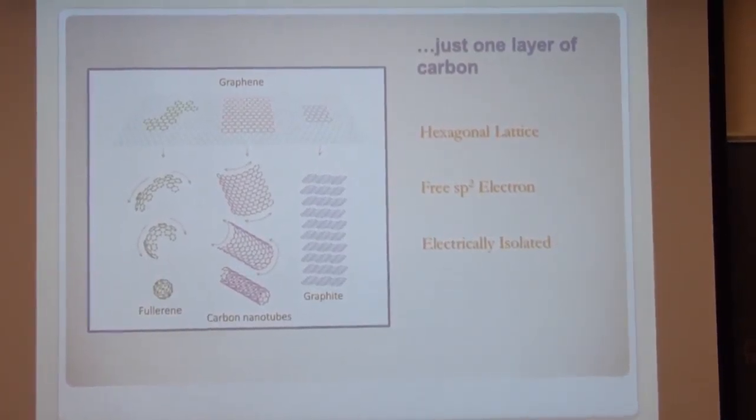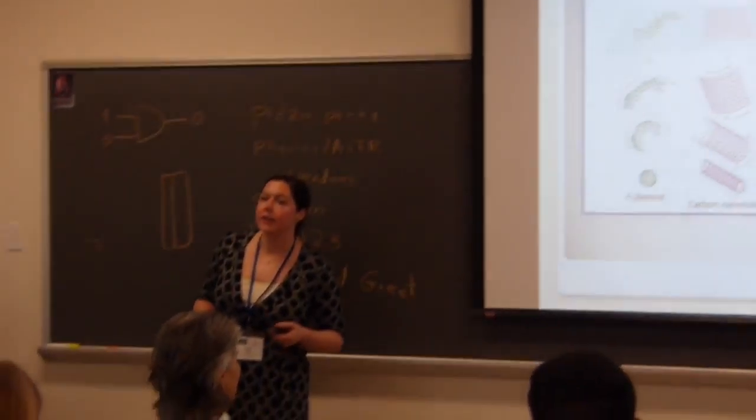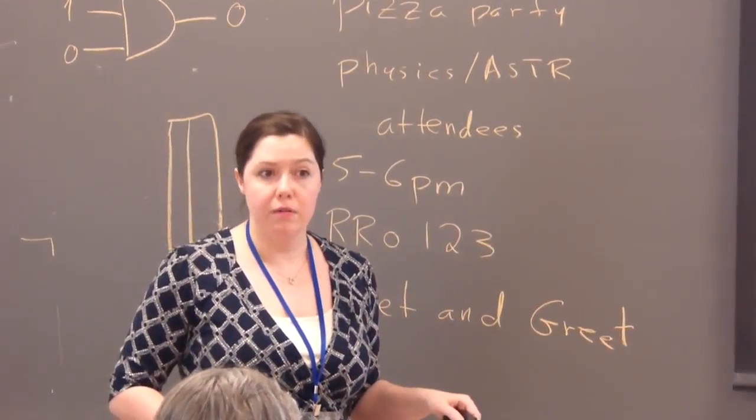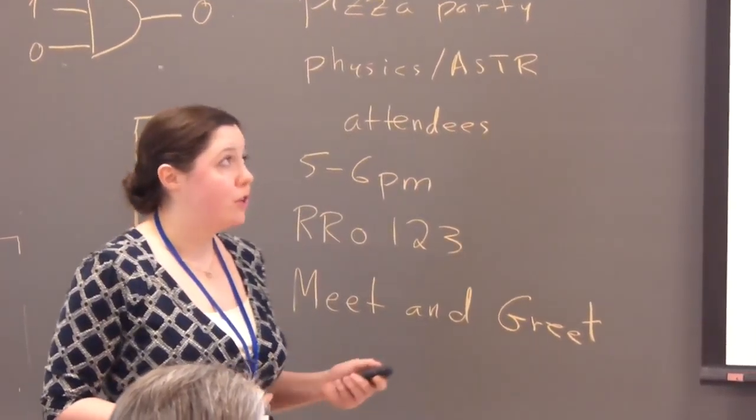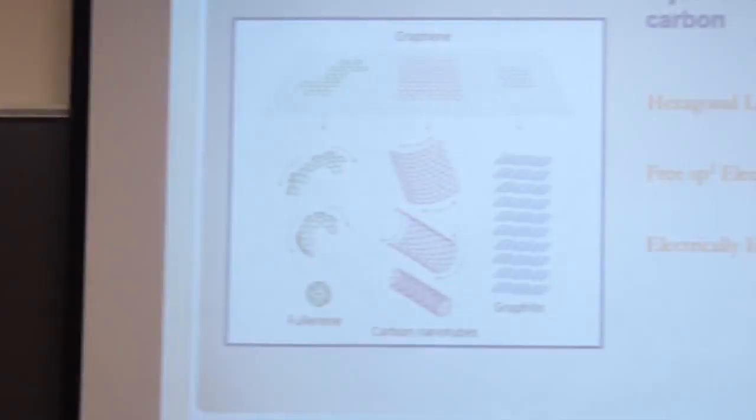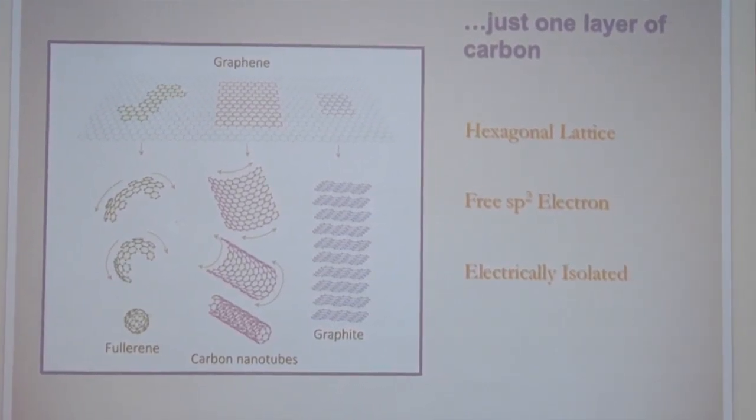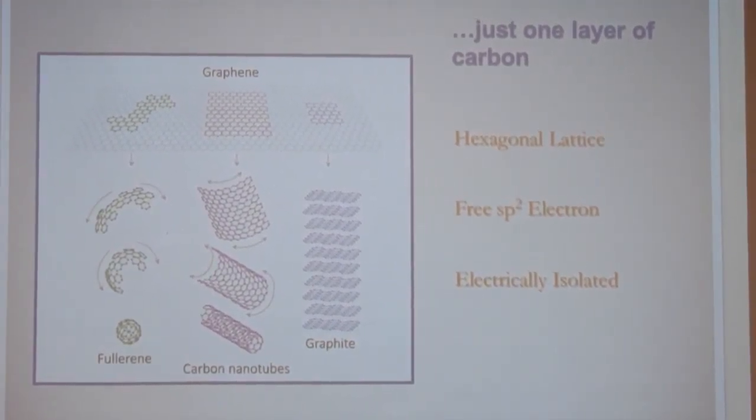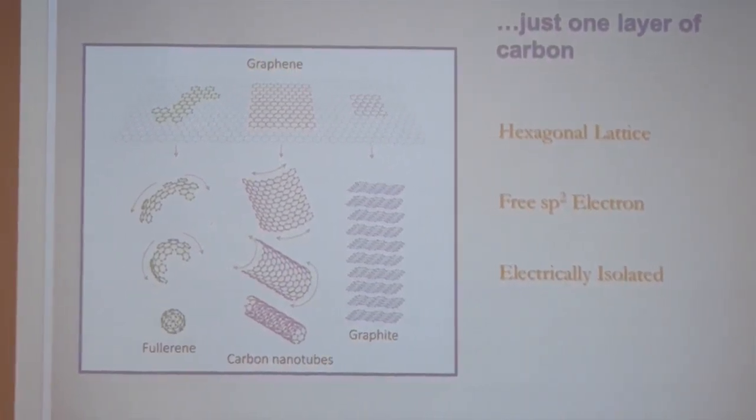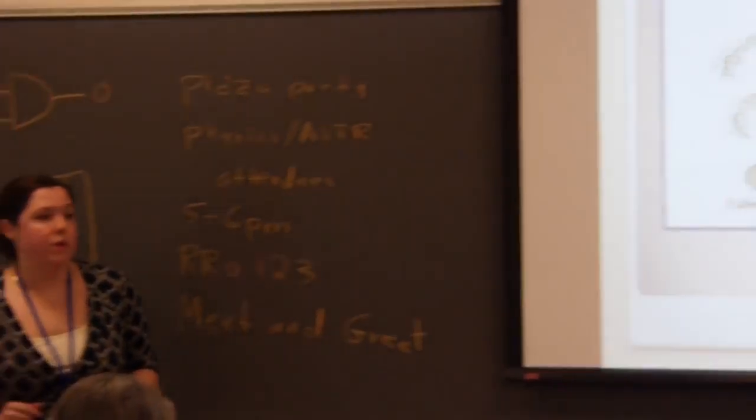So, graphene is just one single layer of carbon atoms that are bonded in a hexagonal lattice form. It's actually the first two-dimensional crystal that's ever been found. There have been a couple more since then, but this has been the first and probably the most groundbreaking. It is sort of the parent material of carbon fullerenes, carbon nanotubes, and graphite. Graphene does exist in monolayer and also few-layer forms. But what really sets that few-layer form apart from graphite is that each layer is electrically isolated.